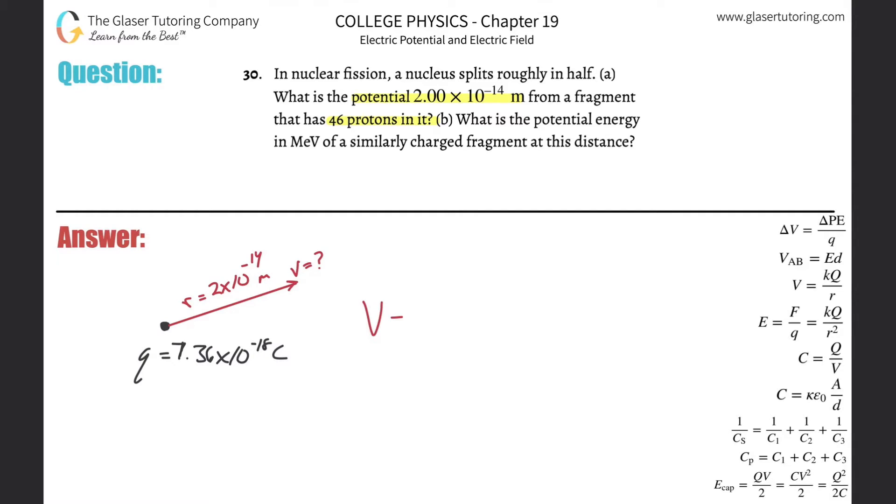And we know that the formula of the voltage due to a point charge is equal to the electrostatic constant K multiplied by the charge that's producing the voltage, meaning this, divided by the distance between where the voltage is being measured and the charge. So I got everything I need. So 9 times 10 to the 9 times Q, which is 7.36 times 10 to the minus 18th divided by the distance, 2 times 10 to the minus 14th.